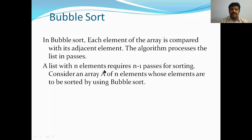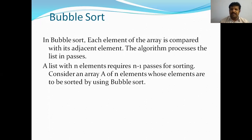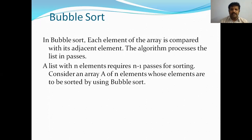This algorithm processes the list in passes — that means cycles. A list with n elements requires n minus one passes for sorting. In bubble sort, if the list has n elements, we need n minus one iterations to sort all the elements in the list.